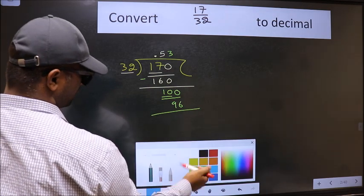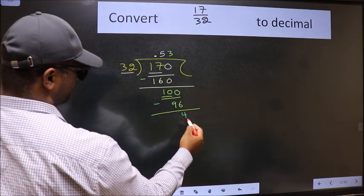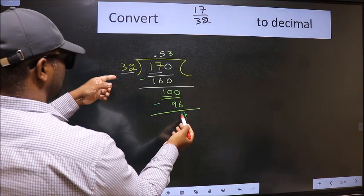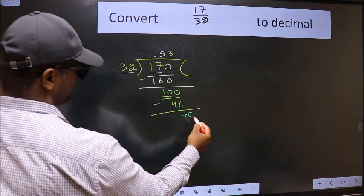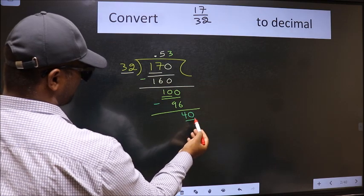Now we should subtract. We get 4. 4 is smaller than 32 and we already have the decimal. So take 0. 40.